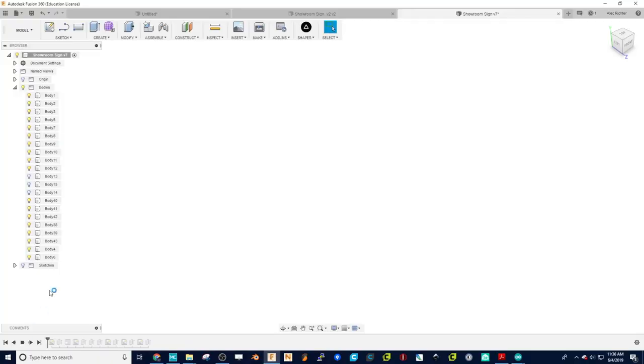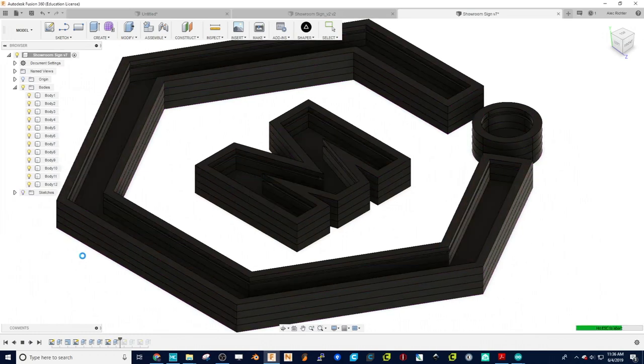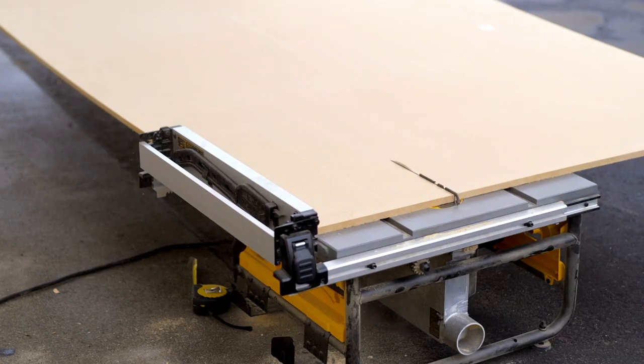Let's get to it. I jumped into Fusion 360 with the vector file of the logo we already had and created a cutout of each of the different layers and the mounting pieces for it, along with the plexiglass.